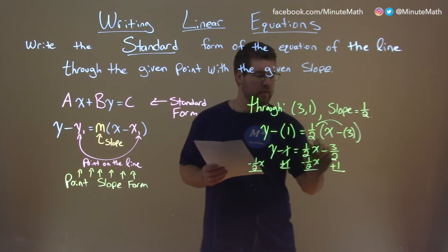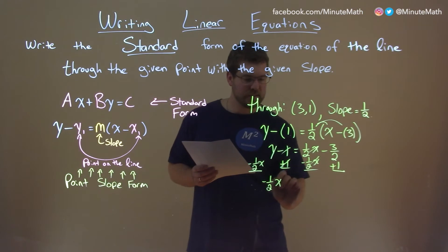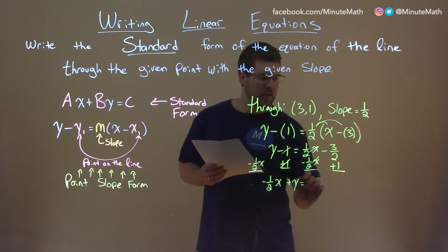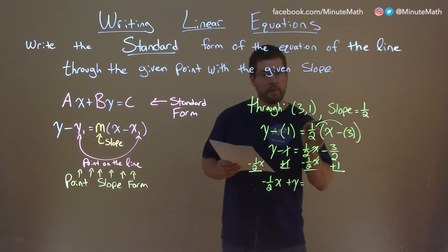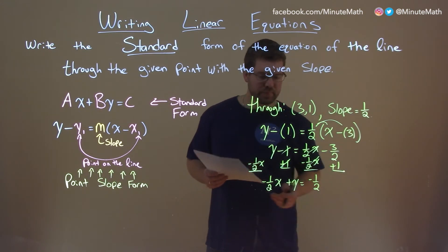We're left with, well, the 1's cancel, these 1/2x's cancel. We have -1/2x plus y equals -3/2 plus 1, which is -1/2.